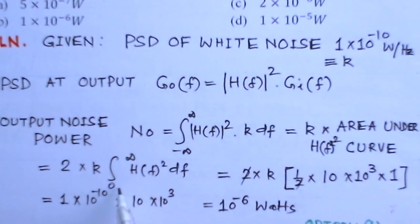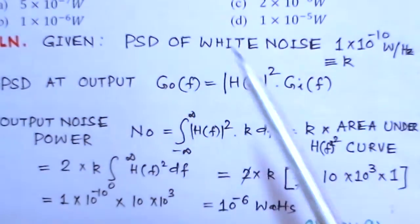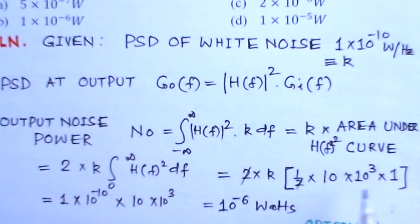We can change the limit from minus infinity to infinity to 0 to infinity, which will be 2×k times this integral. We find out the area under the |H(f)|² curve, that is half the base 10 kHz times height of 1.